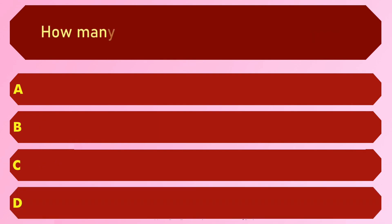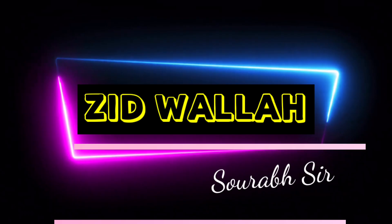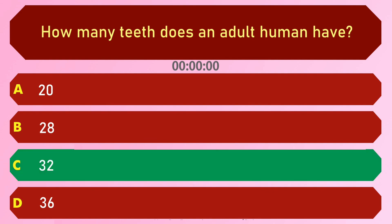How many teeth does an adult human have? Options are: A) 20, B) 28, C) 32, and D) 36. The answer is option C, 32.